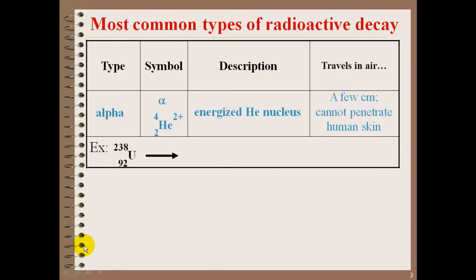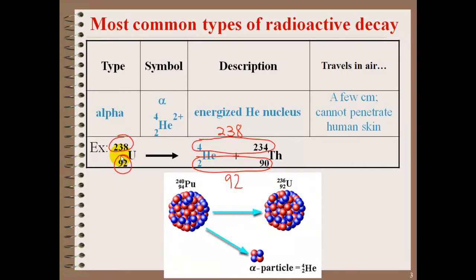Here's an example. Uranium-238 goes through an alpha decay, so one of the products is an alpha particle and the remaining product is thorium-234. Thorium-234 is another radioisotope. You will notice the masses on this side add up to be the same mass on this side, and the proton numbers add up to be the same proton number as the reactant side.